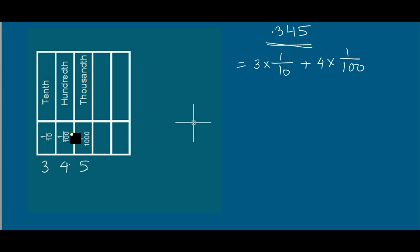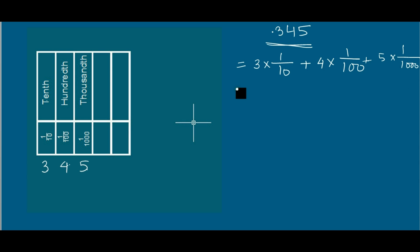...at the hundredths position, plus 5 into 1 by 1000. I just follow the same process and same methods as we do in the case of natural numbers.